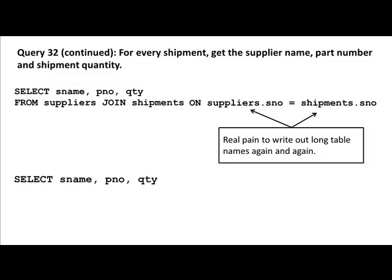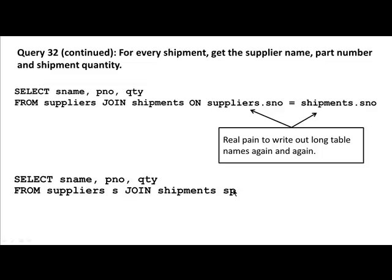Instead of repeating full table names, you can use aliases. For example: FROM suppliers s JOIN shipments sp. Here, 's' and 'sp' are aliases — just names you make up. You could call them 'a' and 'b' or anything you like. Once created, these aliases stand for the table names, so instead of suppliers.supply_number you write s.supply_number, and instead of shipments.supply_number you write sp.supply_number.